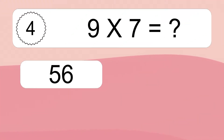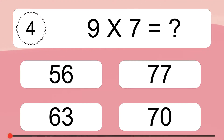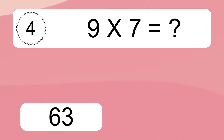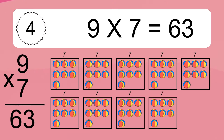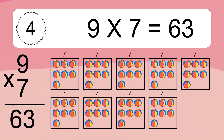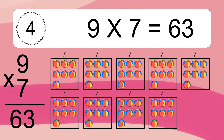Nine times seven equals what? Nine times seven equals 63. We have nine boxes and each box has seven colorful balls inside. If you count all the balls in all the boxes together, you will have nine times seven balls. This equals 63 balls.